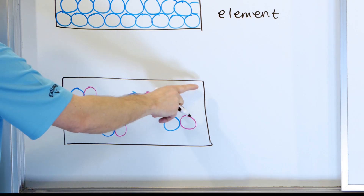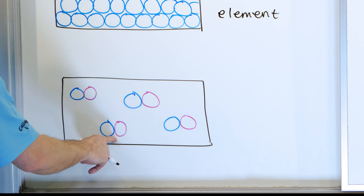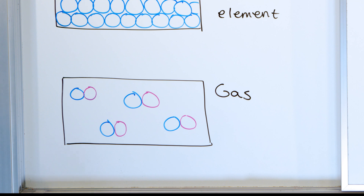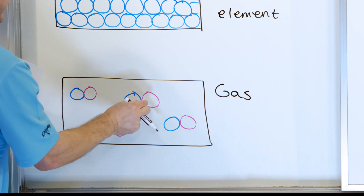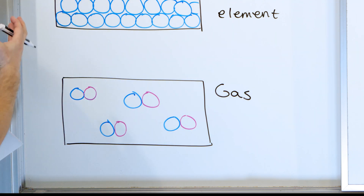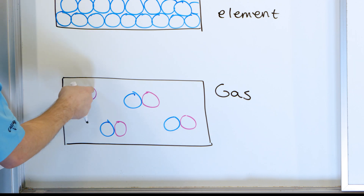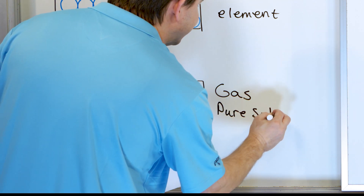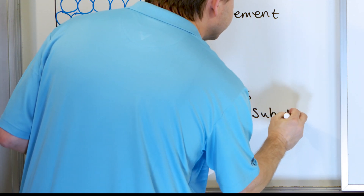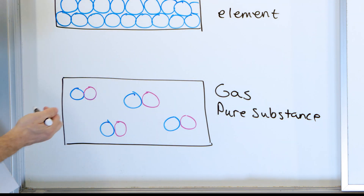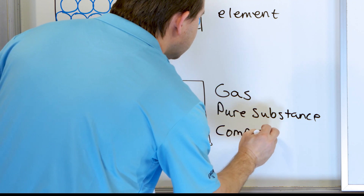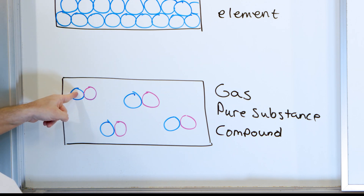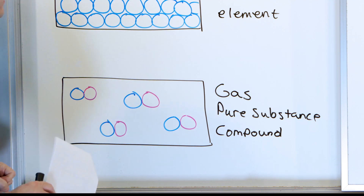The last container has molecules with two different colors bonded together. It looks like a gas because everything's floating around. It's a pure substance because every molecule is identical — this is like carbon monoxide. Yes, it consists of two different elements, but it's still a pure substance. And because it has two different elements bonded together, it is a compound.